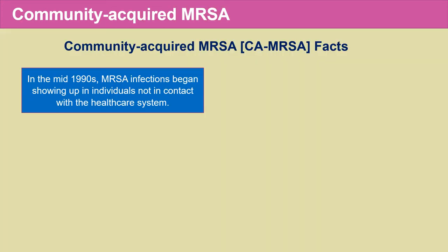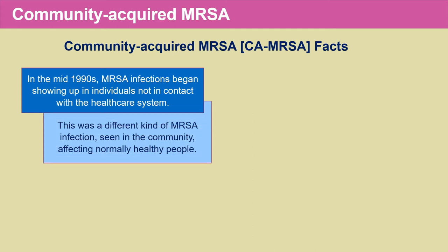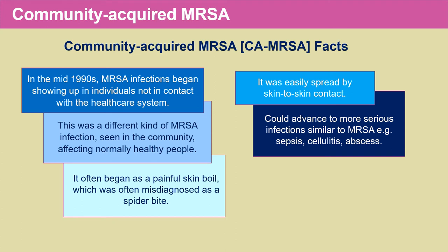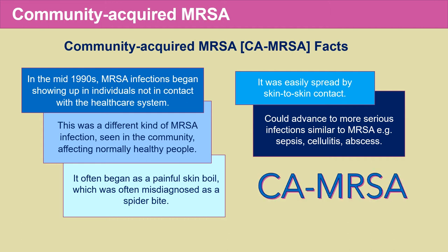Now let's talk about community-acquired MRSA, or CA-MRSA. In the mid-1990s, MRSA infections began showing up in individuals who were not in contact with the healthcare system. This was a different kind of MRSA seen in the community, and it affected normally healthy people. It often began as a painful skin boil — frequently misdiagnosed as a spider bite — and was easily spread by skin-to-skin contact. It could advance in some cases to more serious infections such as sepsis, cellulitis, or abscess.